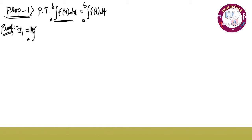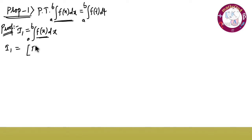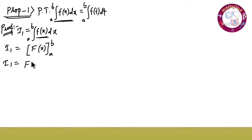So i1 is equal to integration of a to b f of x dx. Now integrating, small f of x becomes capital F of x. Applying the limits from a to b, i1 is equal to F of b minus F of a. This is equation number one.